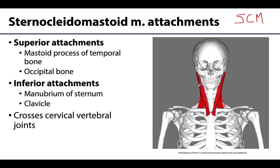There are two superior attachments: the mastoid process of the temporal bone, which is right in this region — if you place your fingers right under your ear, you will feel a bump, and that bump will be the mastoid process. The muscle's attachments continue from the mastoid process posteriorly along the occipital bone, which is the posterior part of the skull. There are two inferior attachments as well, which are a bit more separated or distinct.